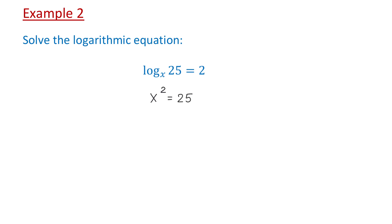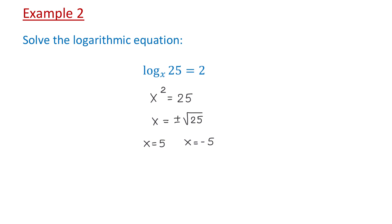According to the square root property, x equals plus or minus the square root of 25. Then x equals 5, or x equals negative 5. Although 5 to the second power is 25 and negative 5 to the second power is also 25, recall that in a logarithm the base has to be positive and not equal to 1. Therefore, negative 5 is not a solution, and the only solution is positive 5.